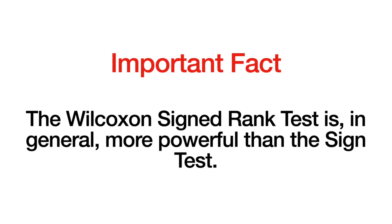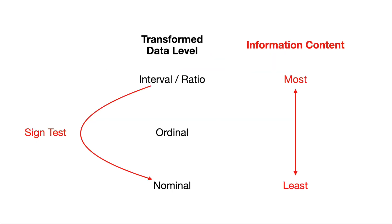Why is the Wilcoxon signed rank test more powerful than the sign test? When we perform the sign test, we transform the original data values, which are typically at the interval or ratio level, down to the nominal level — the lowest and least informative type of data. This gets rid of characteristics that might make a standard test like a t-test not applicable, such as skewness or heavy tails, making the sign test broadly applicable. But the resulting loss of information causes a degradation in the power of the test.